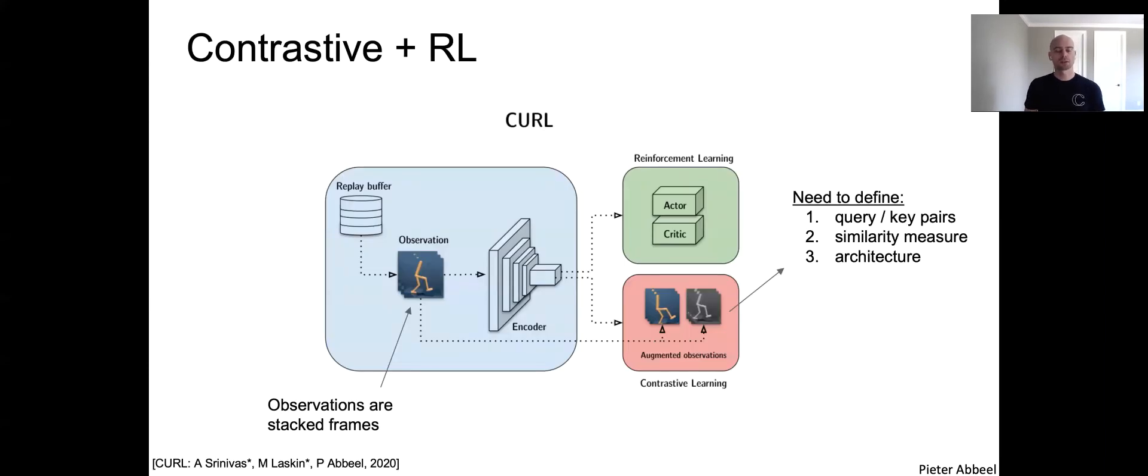In the numerator we have inner product similarity with zi and zj, want to maximize. In the denominator we normalize by negative examples where we want a small similarity. So very simple idea, very powerful. So how can we think about the same idea in the context of reinforcement learning? Well, in reinforcement learning, our agent will collect data, put it into a replay buffer. Then as it's learning, it'll take data from that replay buffer, take that data and follow the encoding path and from there go into an actor network and a critic network to do the reinforcement learning updates. That's the top path in green.